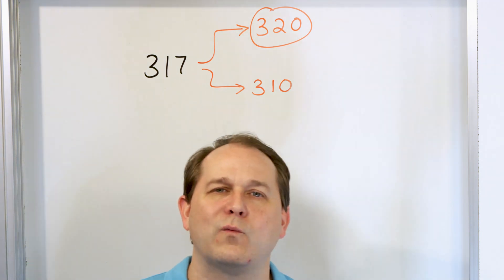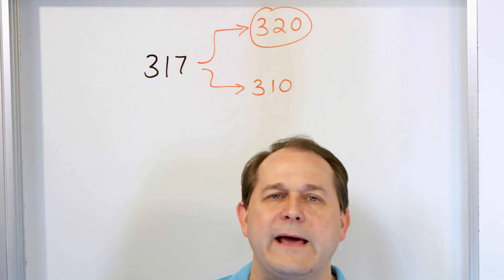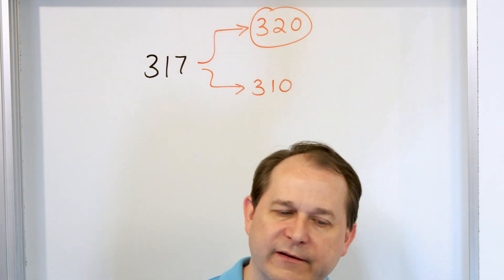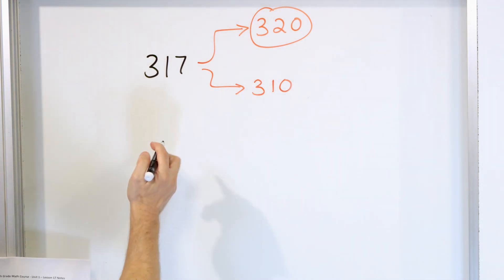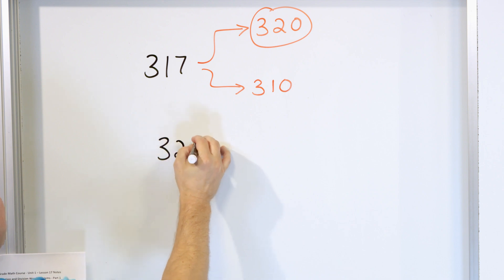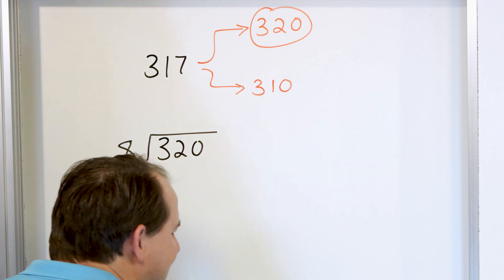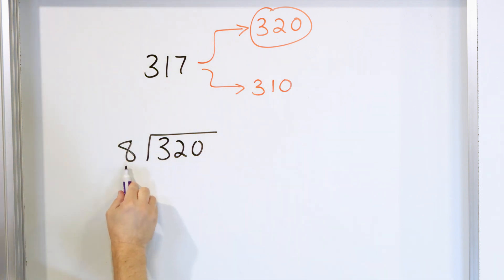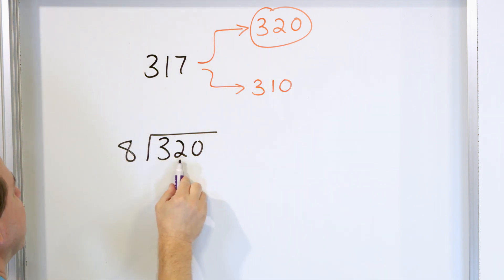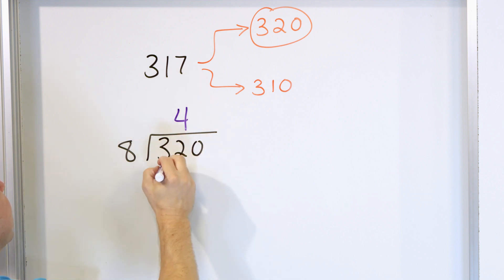Even though we know that's not the right number of guests, we're rounding to make an estimate of what's going on. So what we will do is take the 320 guests and divide by the eight rooms, the eight banquet halls that we have. How many will go in each? Eight times what is 32? Eight times four is 32.